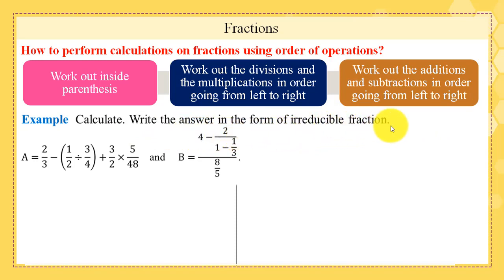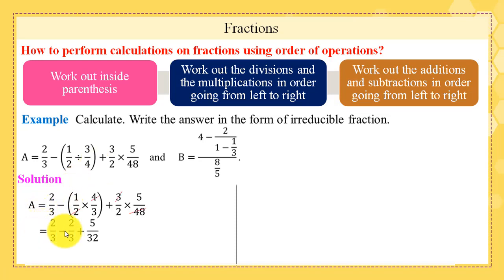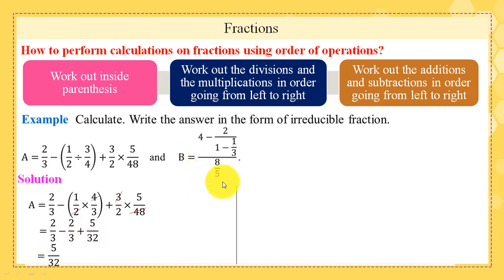Solution: first we work inside the parentheses: 1/2 ÷ 3/4 = 2/3. Second, we work the multiplication: 3/2 × 5/48. So a = 2/3 − 2/3 + 5/32. Since 2/3 − 2/3 = 0, then a = 5/32. Now b = (4 − 2/(1 − 1/3)) / (8/5). We start inside the fraction: 1 − 1/3 = 2/3.